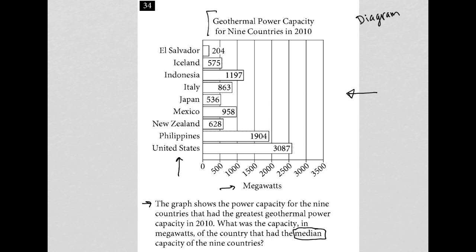Whenever I'm trying to find the median from a list of data, I like to cross out from the edges. What that means is I look for the smallest possible value, which on this list is 204, and I cross out the largest possible value from this list, which is 3087. If I continue to do that process, I'll eventually find my way to the middle value.